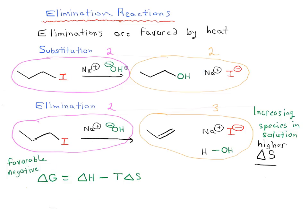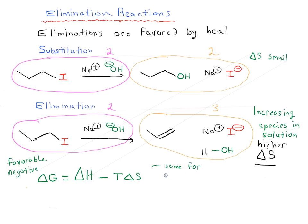Let's think about what happens in a substitution reaction. As we increase the temperature from low to high, our delta S is fairly small for this reaction. So delta S is not going to appreciably change the energetics of our delta G. As we increase the temperature, this T delta S term is not going to have a tremendous effect — it'll have a small effect, but delta G will really be dominated by the delta H term. So we'd expect to have roughly the same delta G for a substitution reaction at low temperature or high temperature.